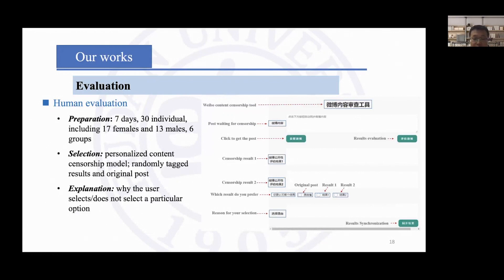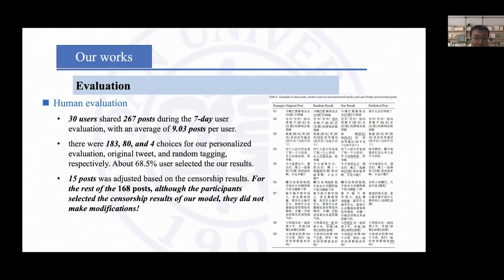We provided users with three evaluation results, from which the user is asked to make a choice. The first option is our model's results, the second is a random classifying option, and the third option is the original post. We also asked users to report their reasons for choosing or not choosing the above options. We found about 16 out of 8 users selected our results, meaning users prefer our censorship results.